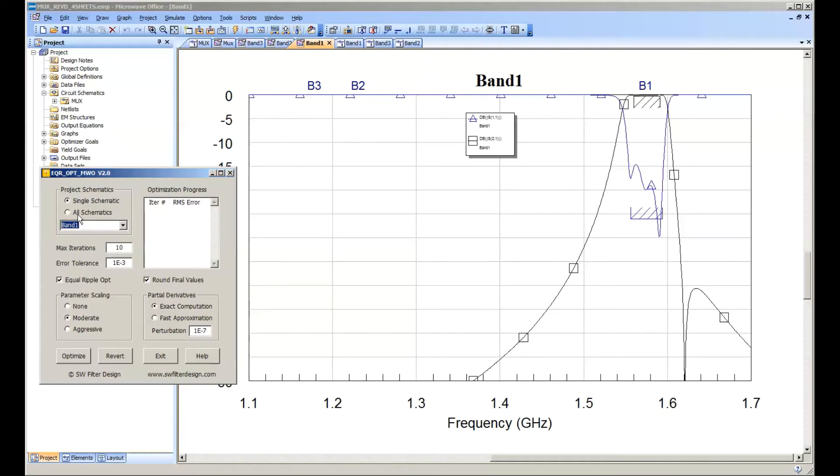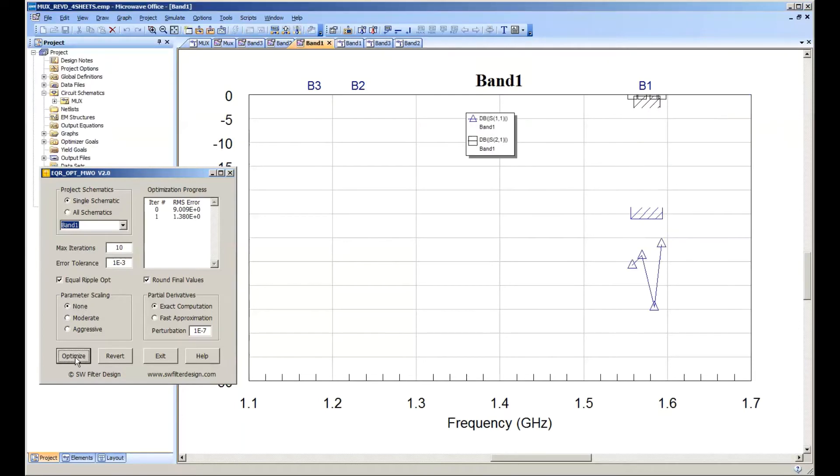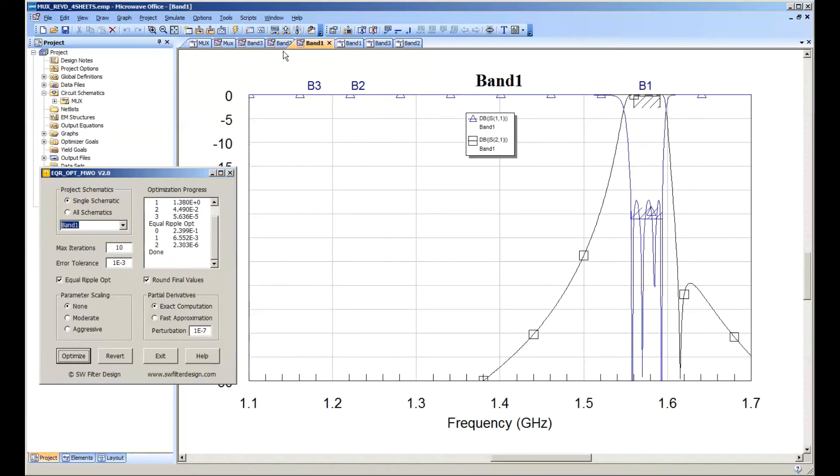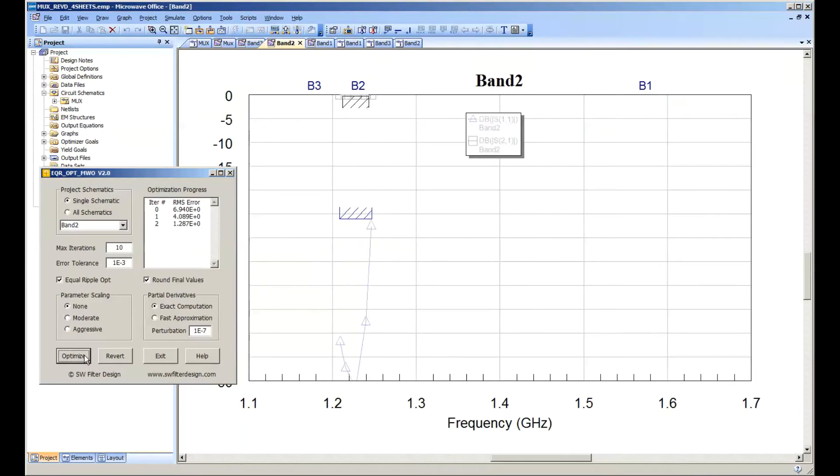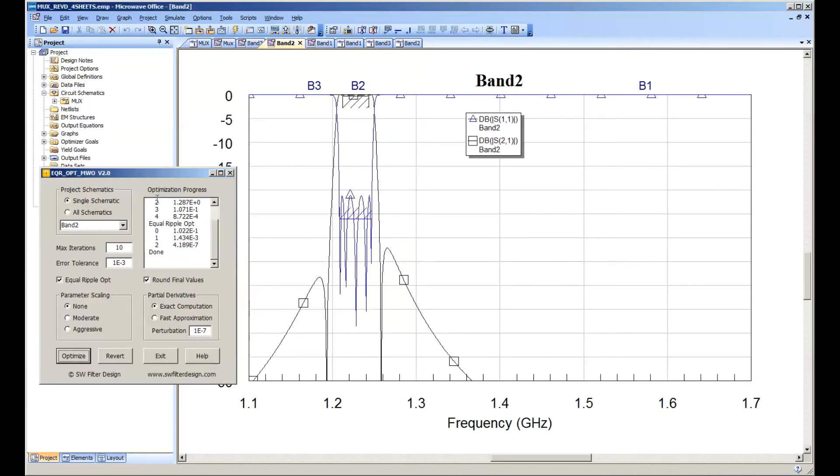So we'll start the optimizer, tell it to work on band one. And it brings it back, and then we'll tell it to work on band two. And it brings that one back, and then we'll tell it to work on band three.